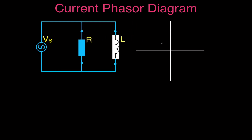In this RL circuit we have a resistor and inductor in parallel, so to find the total current we add the currents through each branch vectorially. We draw the voltage along the positive x-axis as our reference. The current through the resistor is drawn in phase with the voltage, and the current through the inductor is drawn 90 degrees out of phase — the voltage leads the current in the inductive branch.